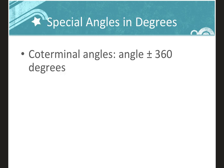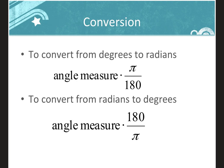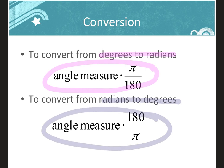In degrees, one full circle is 360 degrees, which equals two pi in radians. To find a coterminal angle in degrees, add or subtract 360 degrees. To convert from degrees to radians, multiply by pi over 180. To convert from radians to degrees, multiply by 180 over pi.